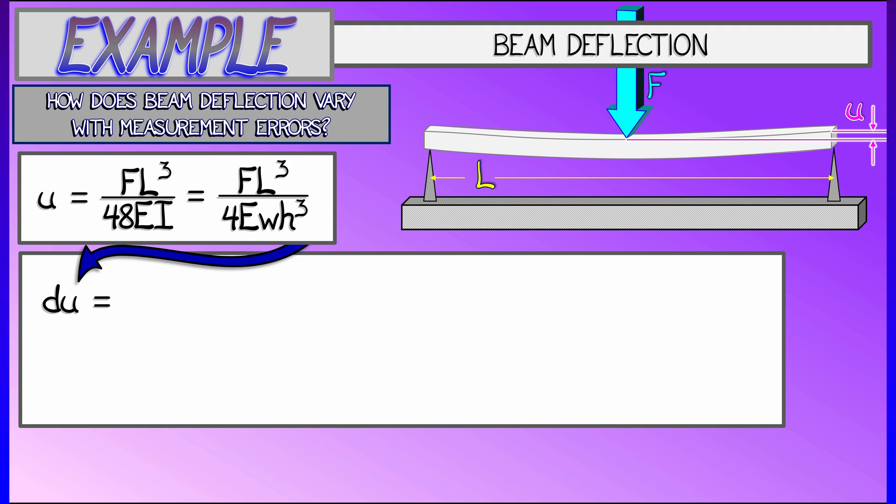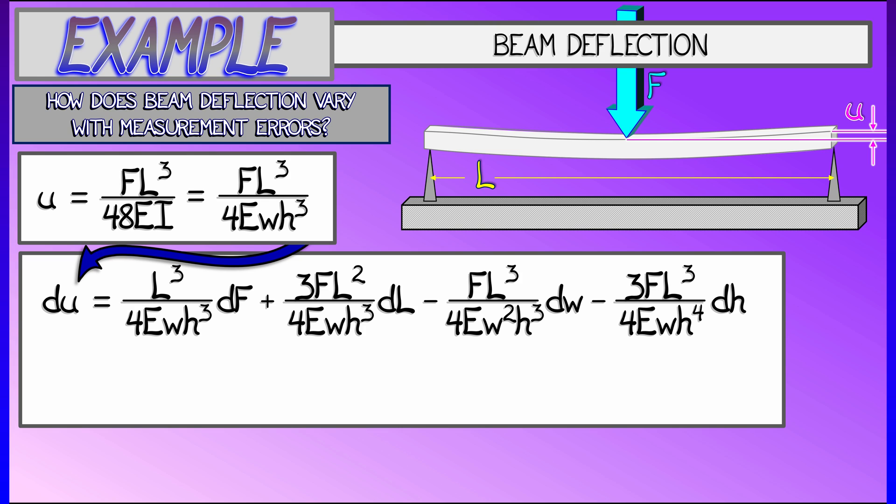Now I want you to take some time. Go compute du using implicit differentiation. It's going to require some partial derivatives and it's going to be a mess. L cubed over 4 e w h cubed d f plus 3 fl squared over 4 e w h cubed d l minus fl cubed over 4 e w squared h cubed d w minus 3 fl cubed over 4 e w h to the 4th d h.